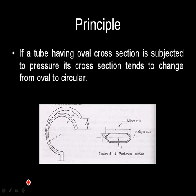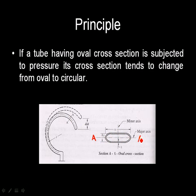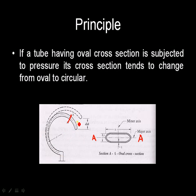If a tube having oval cross section is subjected to pressure, its cross section tends to change from oval to circular. See, this is the original cross section of the tube, that is A-A cross section at this A-A. Now when this tube will be subjected to pressure, it will tend to uncoil as shown in the figure. We will see this in the further slides.